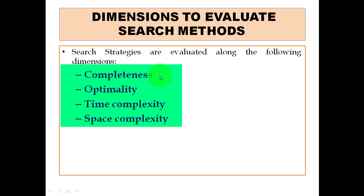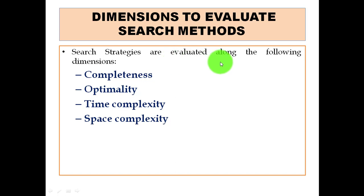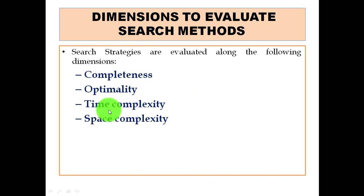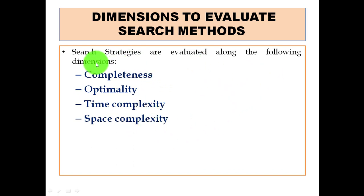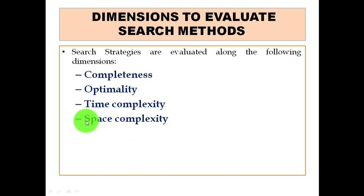Completeness means how much probability there is that the search will be completed within a finite number of steps. Optimality means whether you are getting the solution in an efficient and best possible way. Time complexity gives you the total time that may be consumed during the whole searching procedure. Space complexity means the space required to conduct the search. The first two — completeness and optimality — are very important, and time complexity is also important. Space is somewhat less critical, so we can concentrate on the first three.